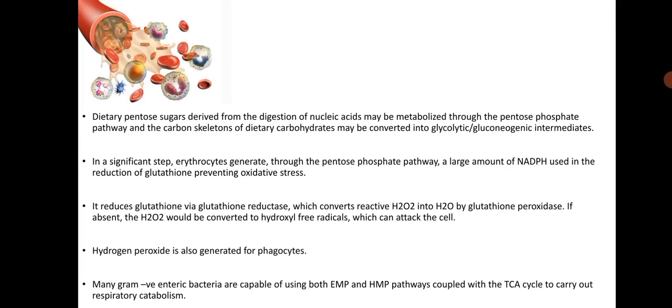Many Gram-negative enteric bacteria are capable of using both EMP and HMP pathways coupled with the TCA cycle to carry out respiratory catabolism.